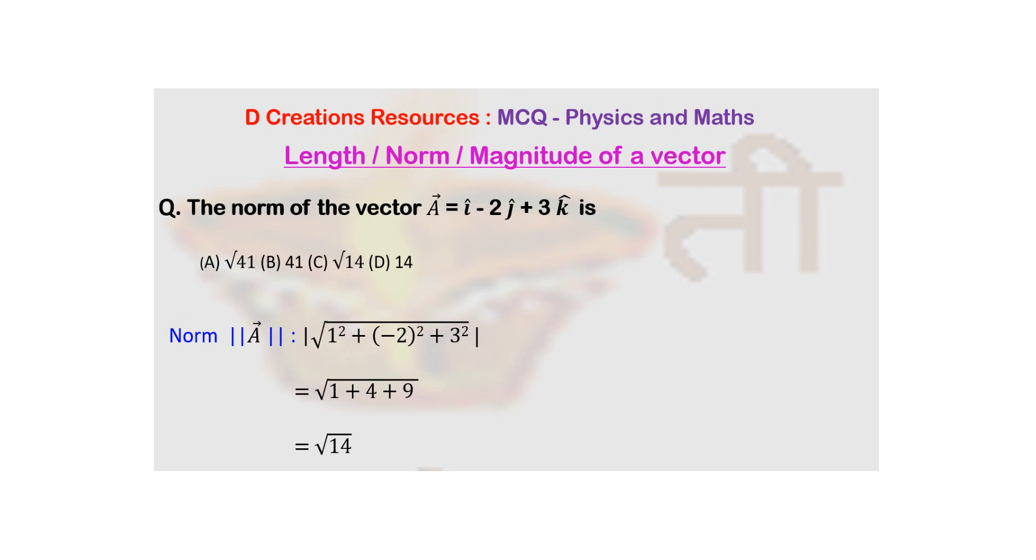And remember that it is length of a vector so it cannot be negative. So by default it is a positive value. It is like a mod value. So it is under root of 1 plus 4 plus 9 which comes out to be root 14.